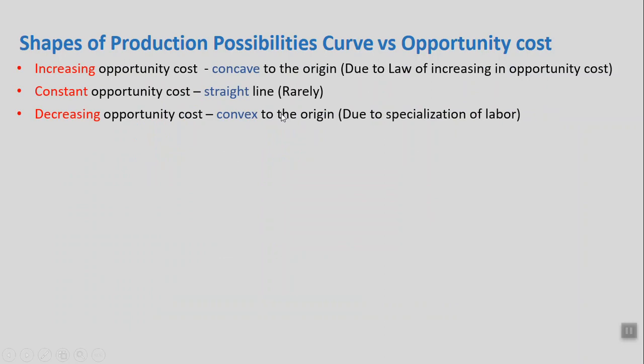We have to understand why the shape is concave to the origin, straight line, or convex to the origin. The PPC is concave to the origin because of the increase in opportunity cost. We also call it the law of increasing opportunity cost.